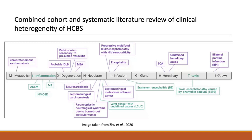The hot cross bun sign can also be associated with infections — there have been case reports associated with prion diseases and prion-related conditions. There could be other metabolic causes, and there is an association with spinocerebellar ataxia. One case report has been associated with phenytoin toxicity showing the hot cross bun sign. Very rarely it can be related to vascular causes such as vasculitis or a pontine infarct.